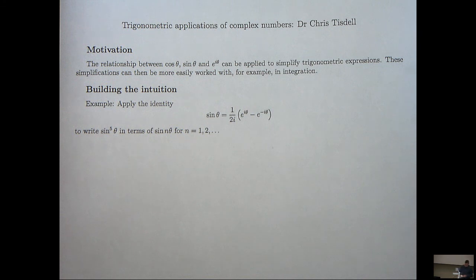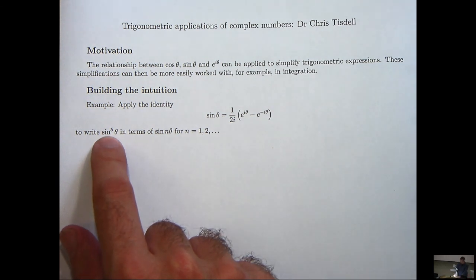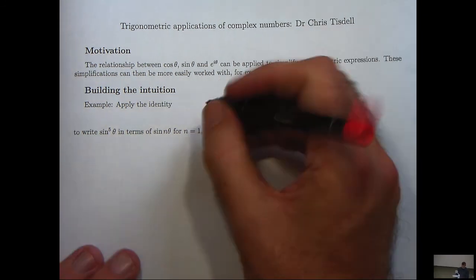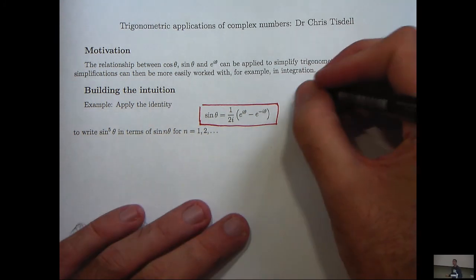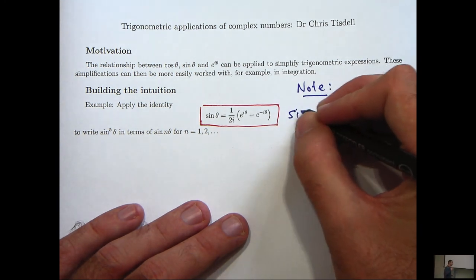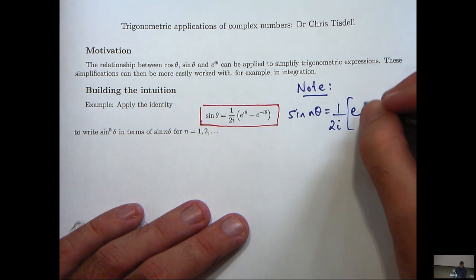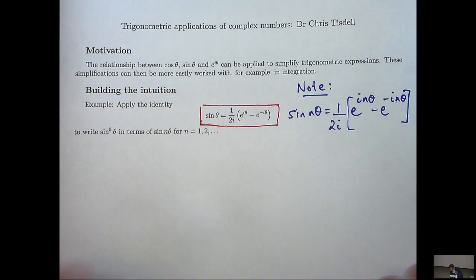So let's look at the following example. We are asked to apply this identity to write sine theta to the power of 5 in terms of sine n theta for n equals 1, 2, 3, etc. So this is what we are going to start with and don't forget that there is a more general version of this, sine n theta equals 1 on 2i e to the i n theta minus e to the minus i n theta. That is going to come into play a little bit later.